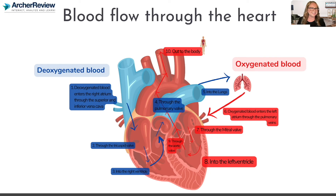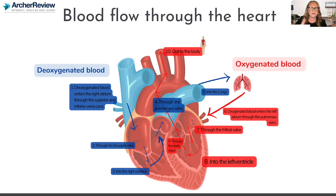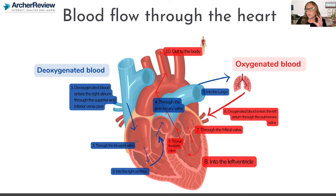We're hopping on the red line. That red oxygenated blood returns to the left side of the heart through the pulmonary veins, goes into the left atria, through the mitral valve into the left ventricle, then through the aortic valve into the aorta. And where does the aorta bring our oxygenated blood? Out to the body.